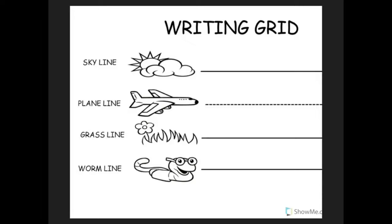E. E is extra special. E does not start at the skyline, it does not start at the plain line — it starts in between the plain line and the grass line. It's extra special. Put your pencil in between the plain line and the grass line, fly forward, stop, curve up to the plain line and around to the grass line.